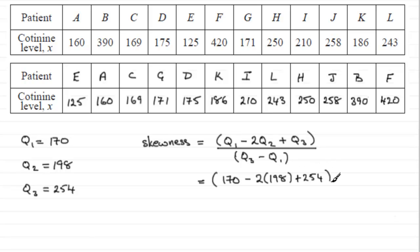And then all of that is divided by what is really the interquartile range, q3 minus q1, so that's 254 minus 170. And if you work that out, you get a third, exactly a third.